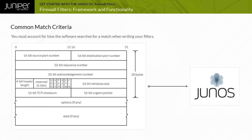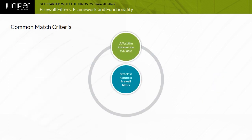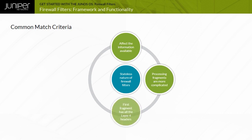You would have the system check that the packet was a TCP packet and whether the TCP ACK flag was set. The stateless nature of firewall filters can affect the information available when processing fragmented packets. Processing fragments is more complicated with stateless firewall filters. The first fragment should have all the layer 4 headers, but subsequent fragments do not. Attempting to check layer 4 headers in fragments produces unpredictable results.